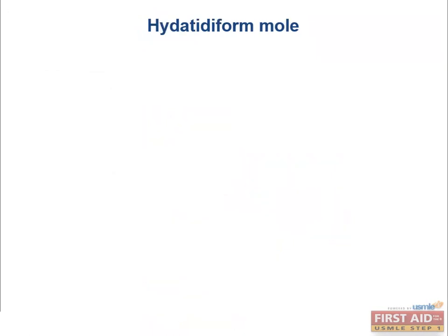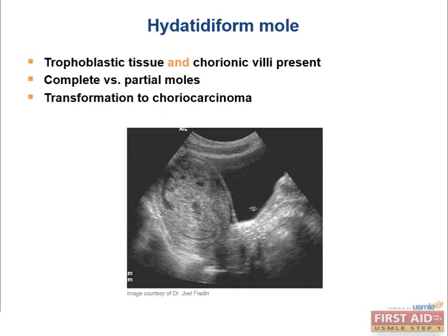A hydatidiform mole is one of the highest yield pathologies you need to know for the reproductive system on step one. A hydatidiform mole is a non-viable pregnancy caused by two sperm fertilizing an empty egg — called a complete mole — or two sperm fertilizing a normal egg, which would be a partial mole. If two sperm fertilize an empty egg in a complete mole, the resulting karyotype will be 46XX or 46XY.